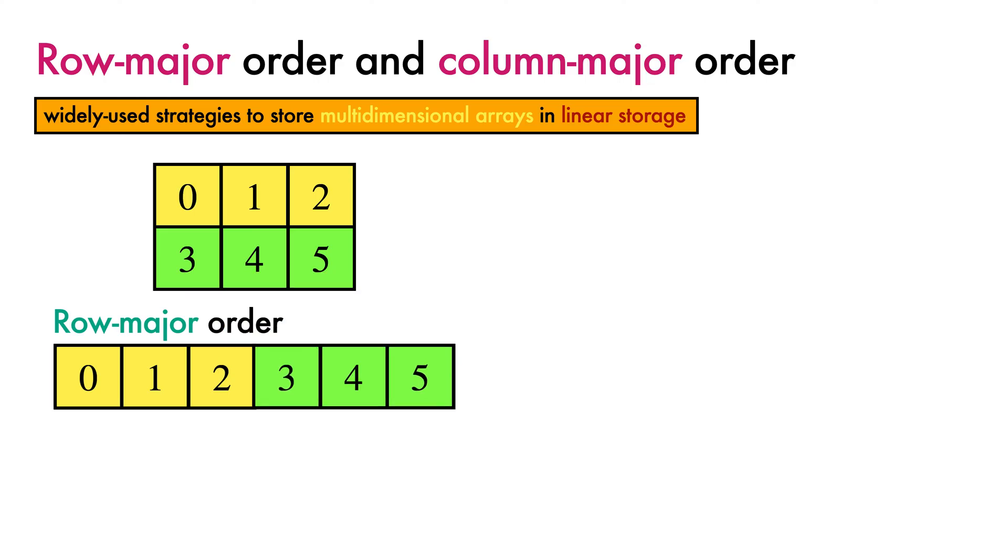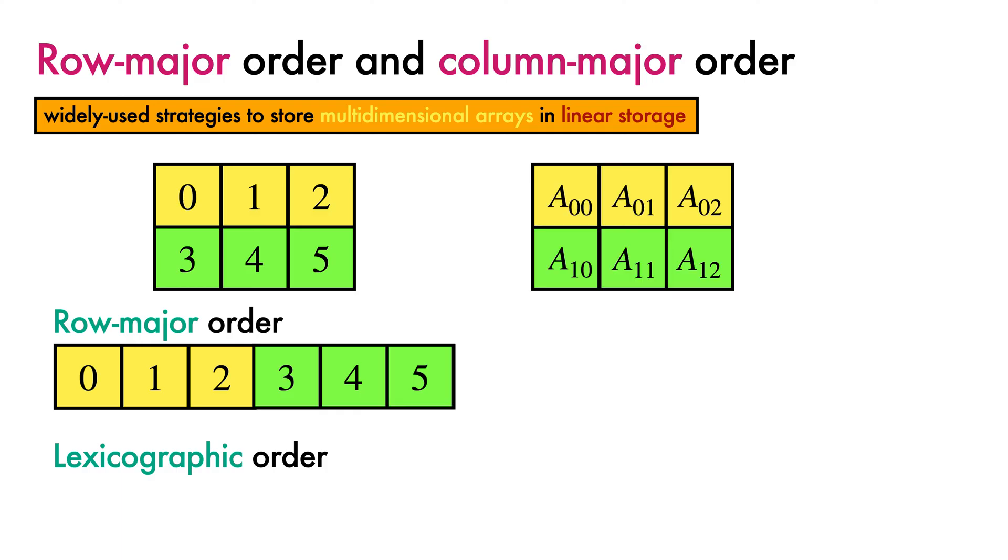This way of storing a matrix is also said to use lexicographic order. To see why, let's first rewrite our matrix using subscripts rather than values. For consistency, I'm starting the subscripts from 0 as Dijkstra prefers, rather than starting subscripts from 1, as is more common in linear algebra.